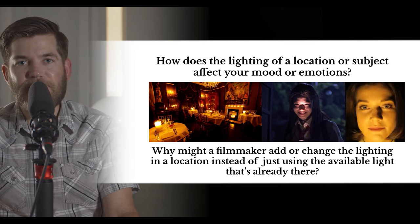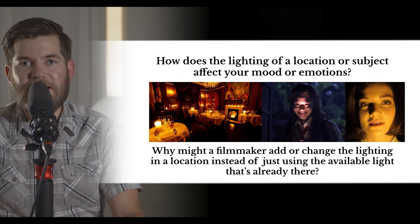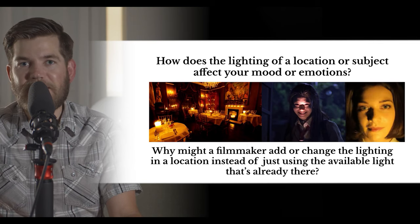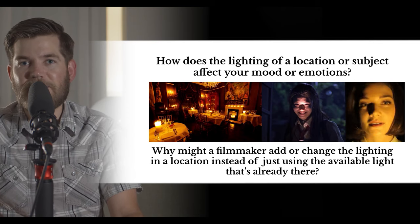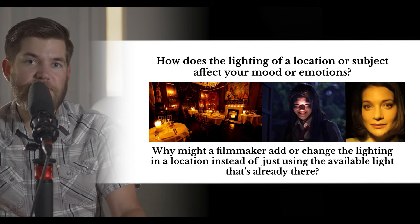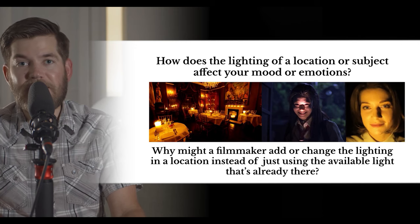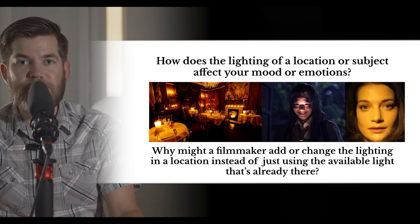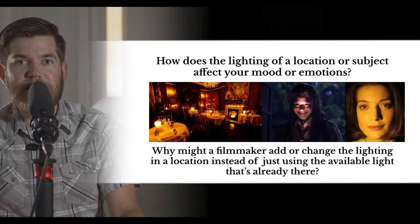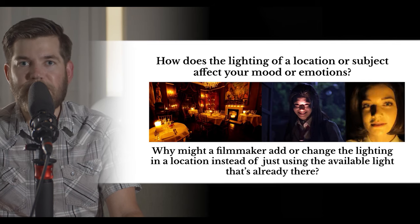Light can come from many different directions and it can affect the way that we interpret a subject. Light can also change colors and that can affect your mood. It can also be bright or dim, and that can also affect mood and emotion.